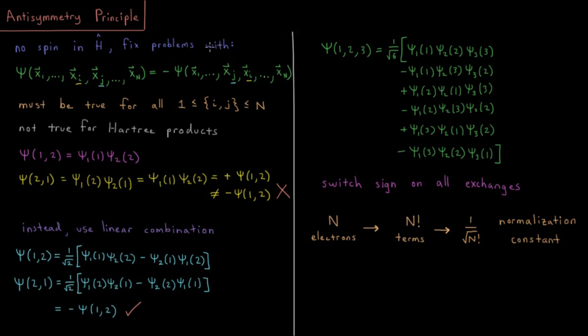The way we fix that is by enforcing what we call the antisymmetry principle. This is treated as a postulate of quantum mechanics just in the same way all the other postulates are. It's not something we prove. You can prove it if you go a little bit more deeply into relativistic quantum mechanics, but for non-relativistic quantum mechanics, we're going to treat this as a postulate, something that is stated without proof and then just taken moving forward.